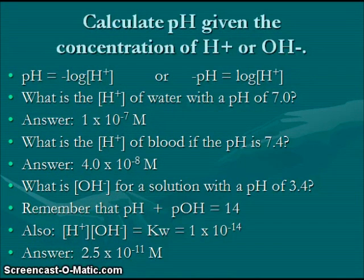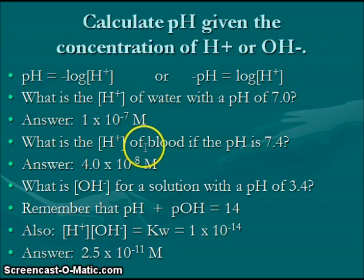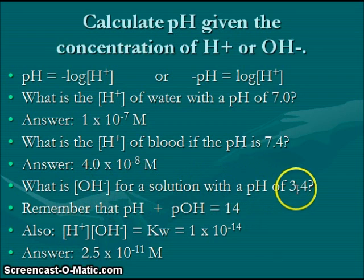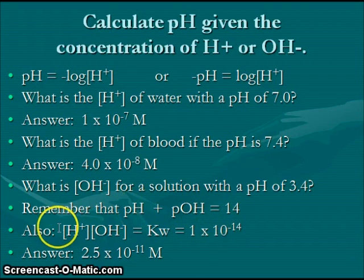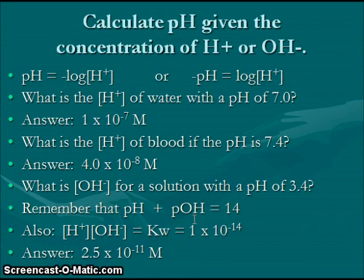Let's look at examples of calculating pH. The hydrogen ion concentration of water with pH 7.0 is 1×10⁻⁷ molar, found by calculating 10 to the negative pH. For blood with pH 7.4, enter 10 to the negative 7.4 into your calculator, giving 4.0×10⁻⁸. For a solution with pH 3.4, find the hydroxide ion concentration using pH + pOH = 14 and [H⁺][OH⁻] = 1×10⁻¹⁴, arriving at 2.5×10⁻¹¹ molar. We will discuss how to solve this in class.